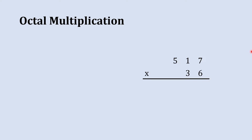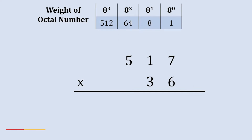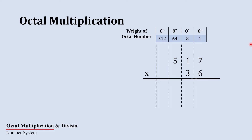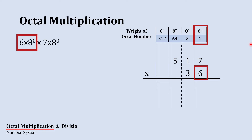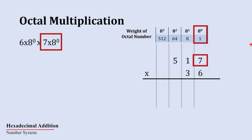Let's start with the least significant bit of the multiplier. Here the weightage of the octal number is given for our reference. We are going to multiply the first digit of the multiplier with the first digit of the multiplicand. So here 6, which has a weight of 8 raise to 0, gets multiplied with 7, which has a weight of 8 raise to 0.